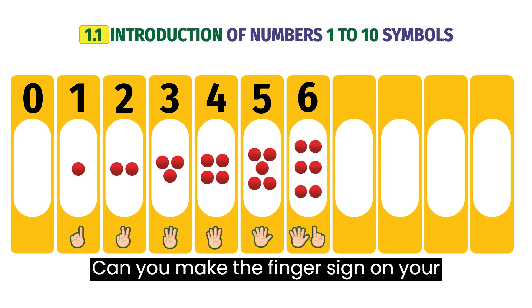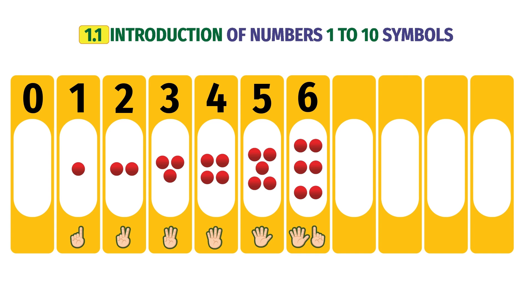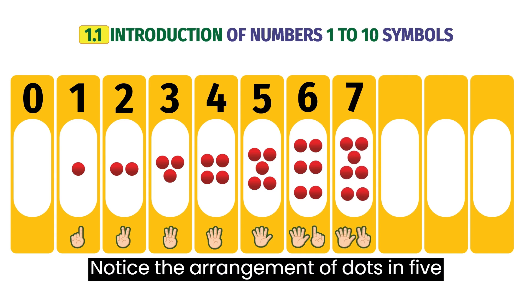Can you make the finger sign on your fingers for the next number? The number is 6. Notice the arrangement of dots in 5 and 2.